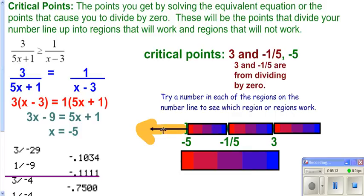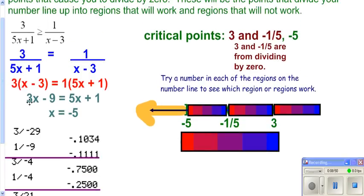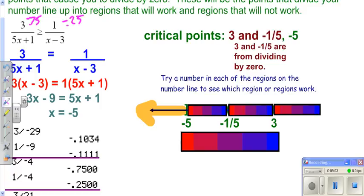Try negative six on the far left — plugging into the original expressions, you get three over negative twenty-nine and one over negative nine. Their decimal approximations show this one is farther to the right, meaning it's greater — so the inequality holds and we shade there. Try negative one in between: you get negative three-fourths on the left side and negative one-fourth on the right. Negative one-fourth is farther right (greater), so negative three-fourths is not greater — the condition fails and we don't shade in between.